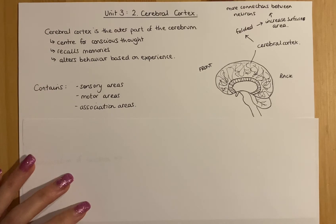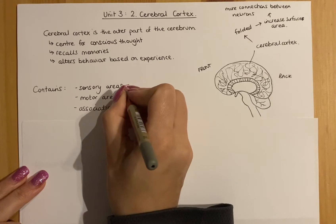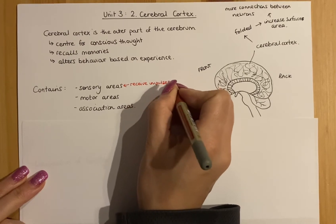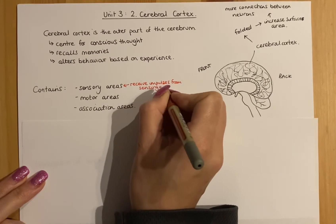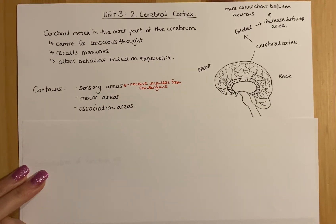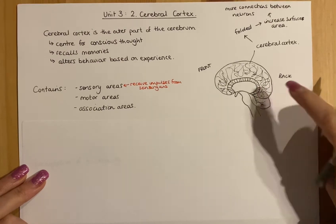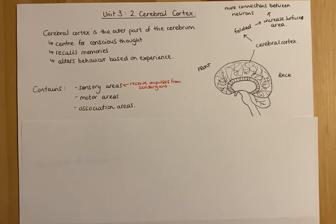In the cerebral cortex there are three main areas we talk about: the sensory, the motor, and the association areas. The sensory area receives impulses from sense organs — for example, there's an area at the back called the occipital region which receives information from your eyes, and areas that receive auditory information. These are all sensory areas that receive information from sense organs.